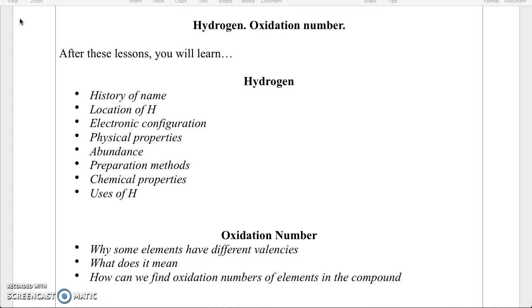We'll talk about history of name, location of hydrogen in the periodic table, and discuss electronic configuration. Then we'll write physical properties, evidence and preparation methods of hydrogen. Of course, we will discuss chemical properties and mention uses of hydrogen.